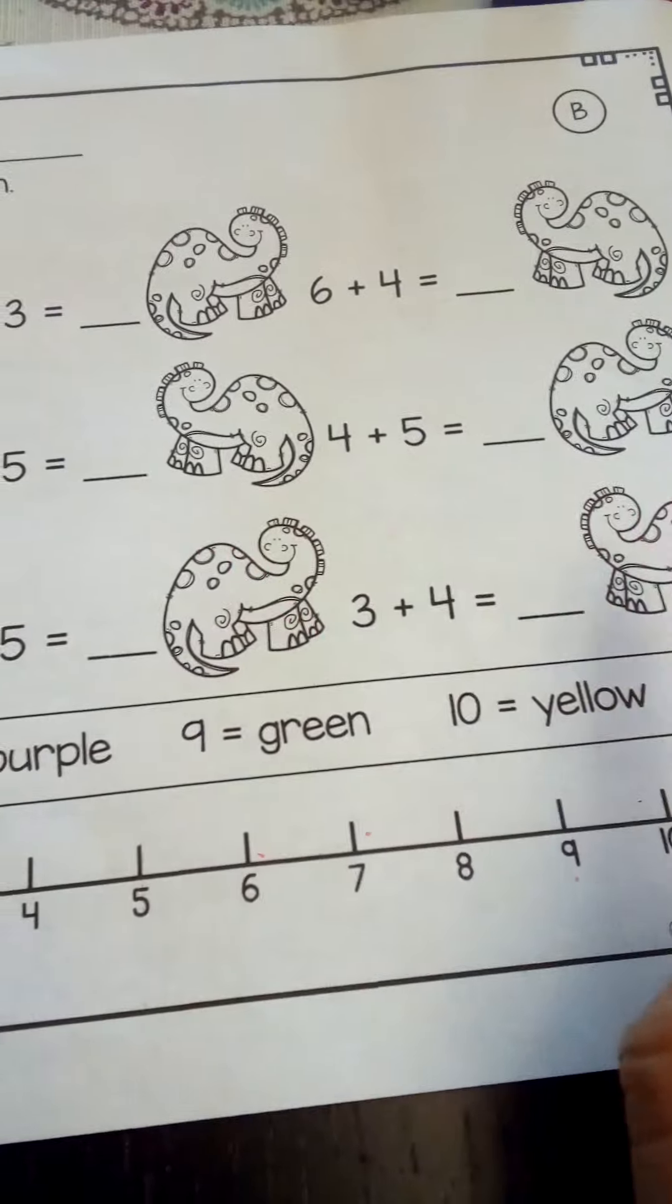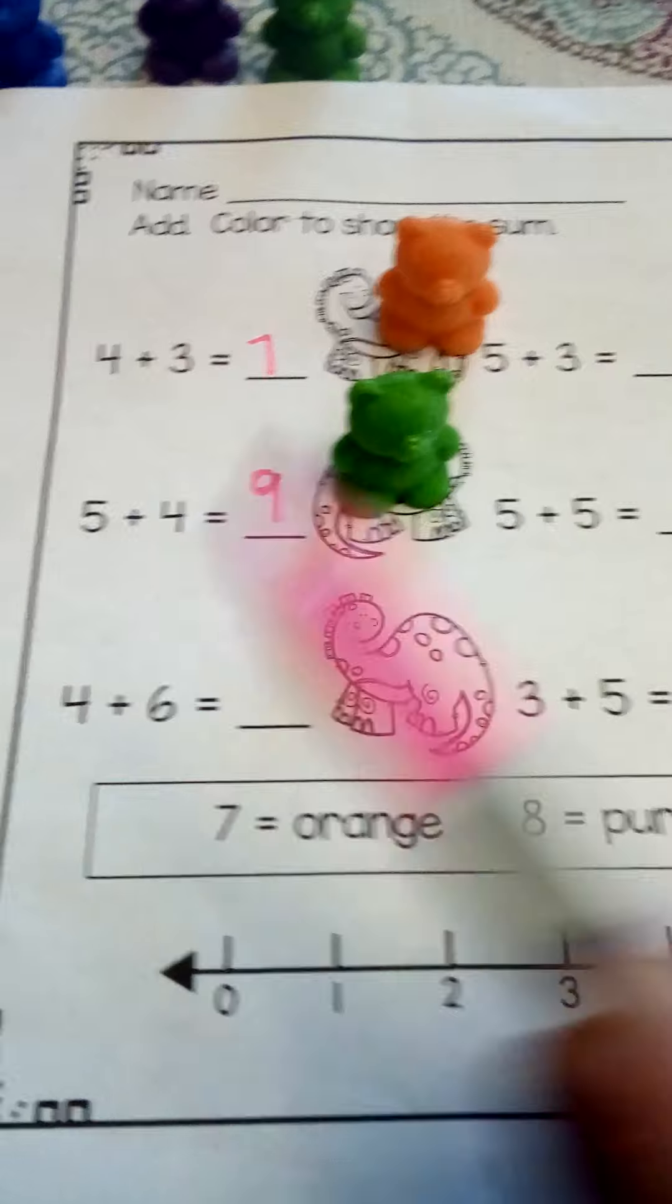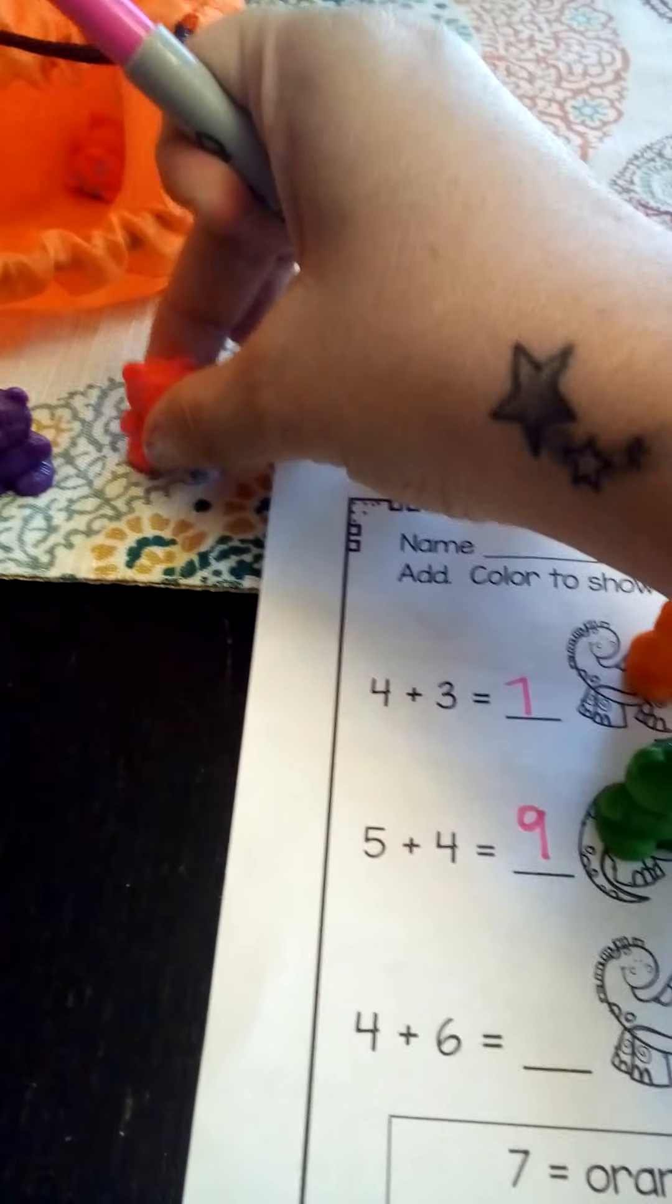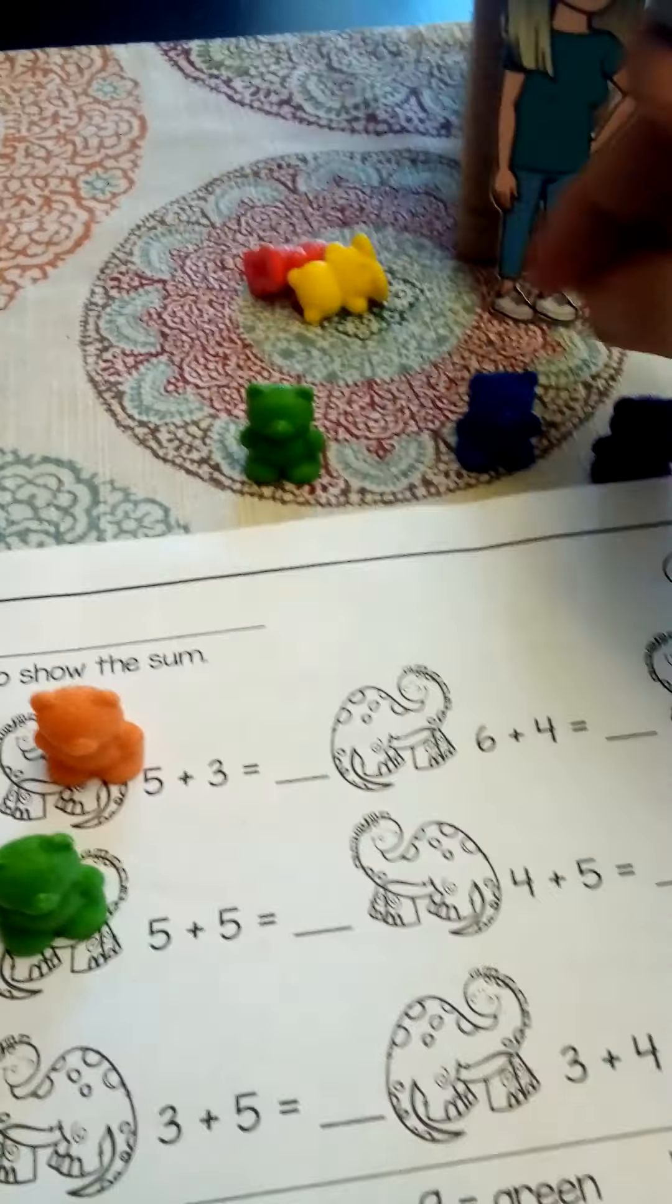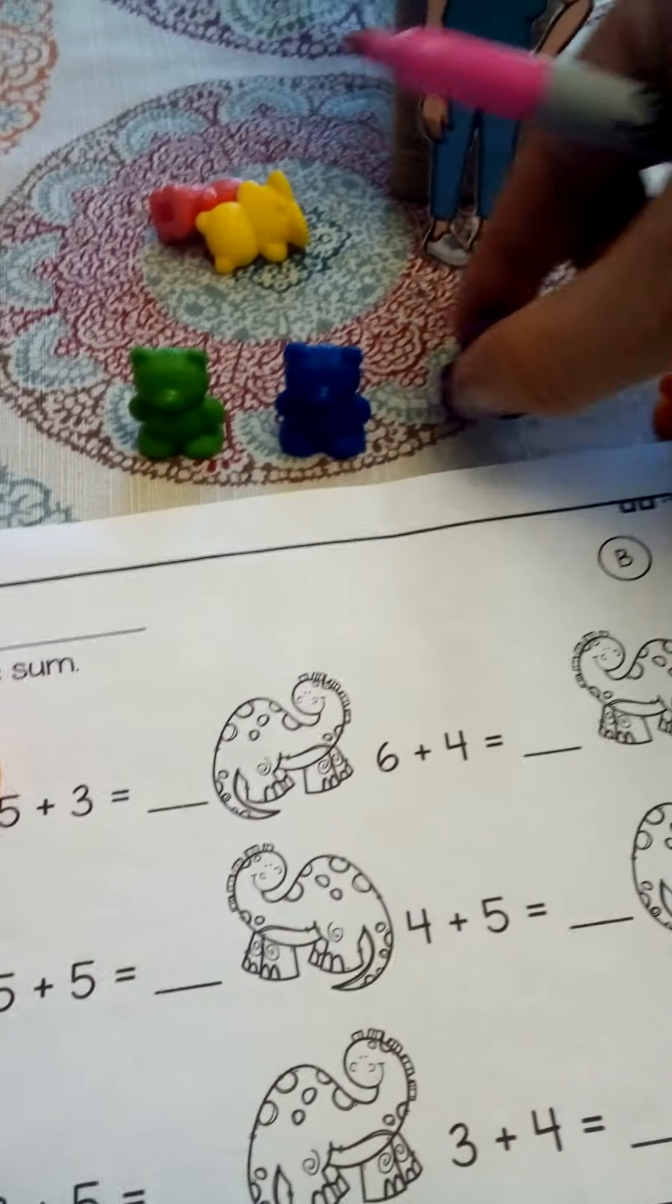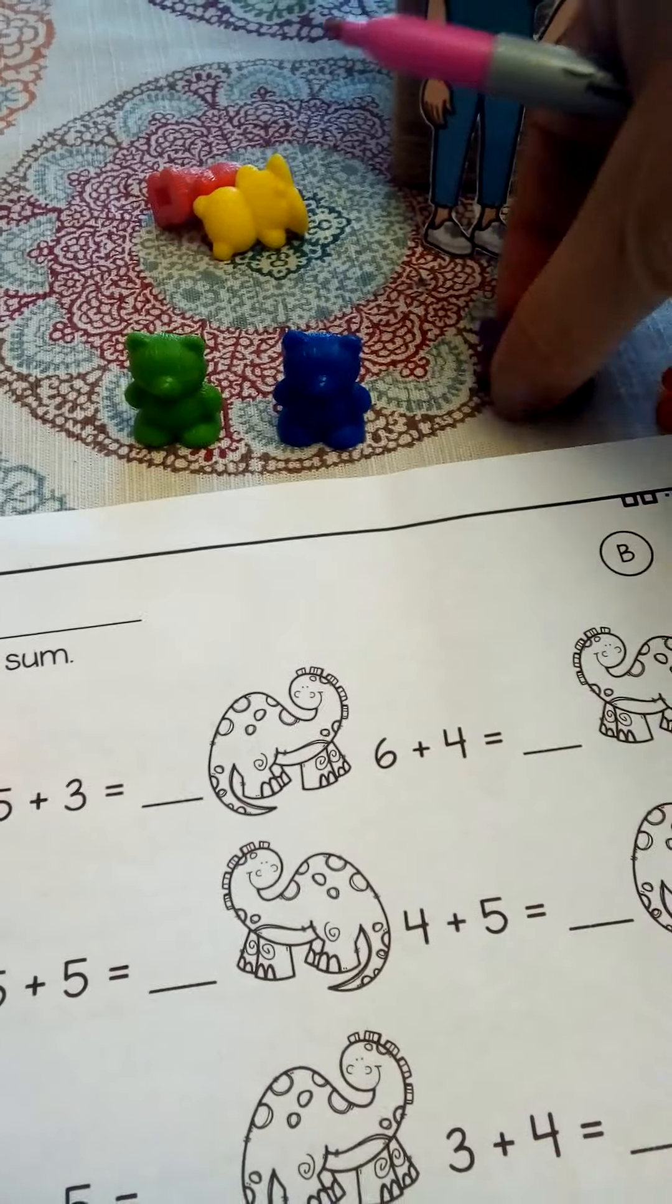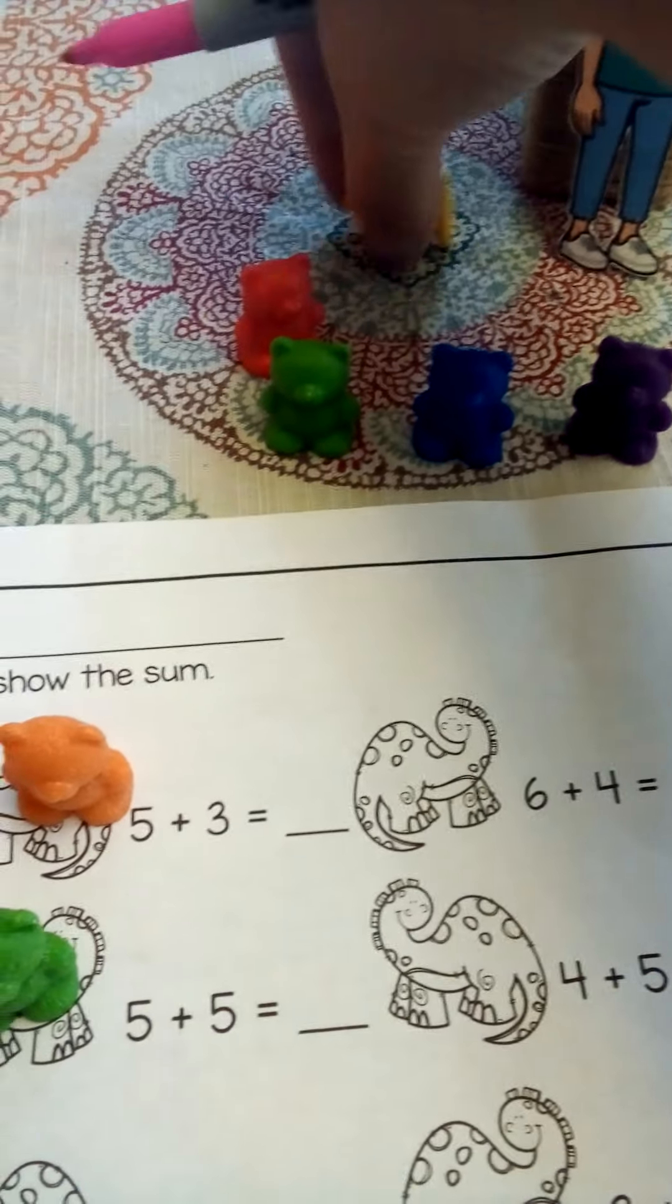Okay. One more, and then you can do the rest of these on your own. Okay. At home. We need four bears, four plus six. One, two, three, and four. And then we need six. One, two. Oh my goodness. They keep falling over. Four, three, three, four, five, and six. Okay. Let's count them up. Ready?